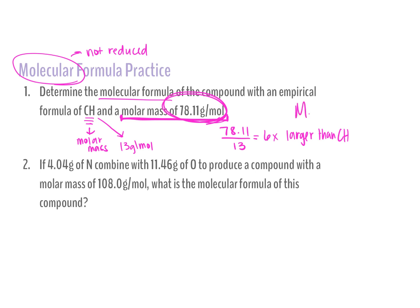So my unknown is six times larger than CH. I distribute that six through: my molecular formula is C6H6.